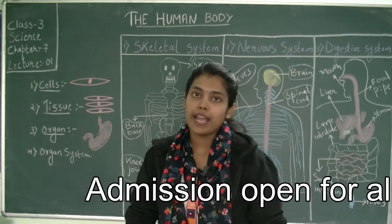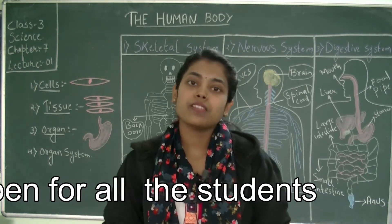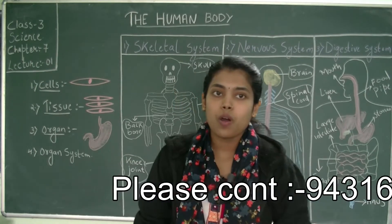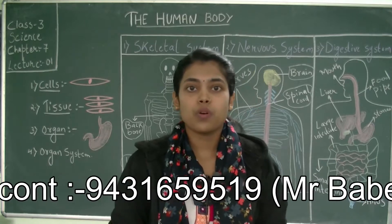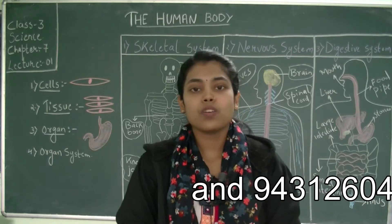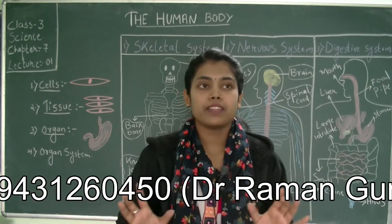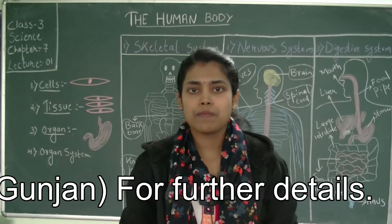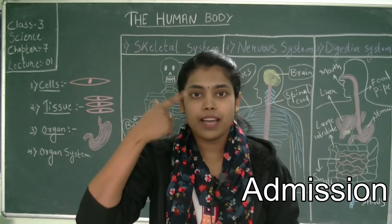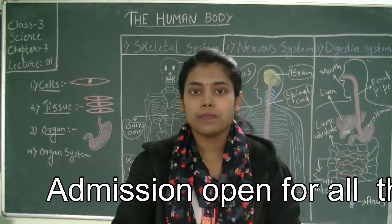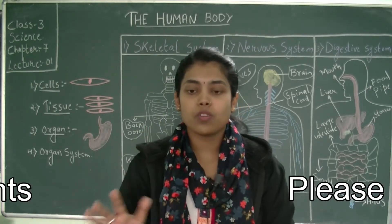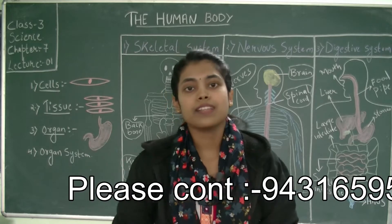Before that, I would like to explain the topic of sense organs. Sense organs help us to know what all things are going on around us. The main parts which come under sense organs in our body are the eyes, the nose, the tongue, the ears, and the skin. These are the five main parts of the body which are called the sense organs.